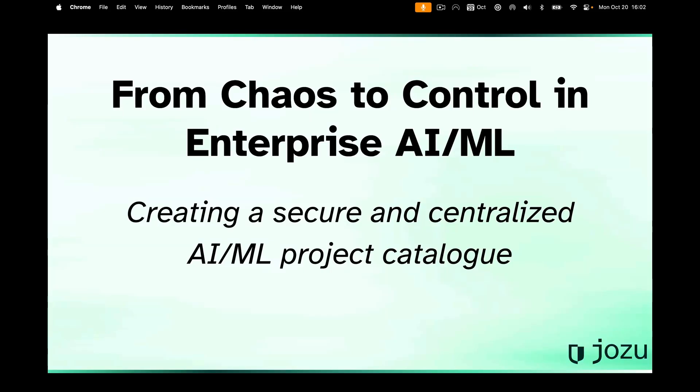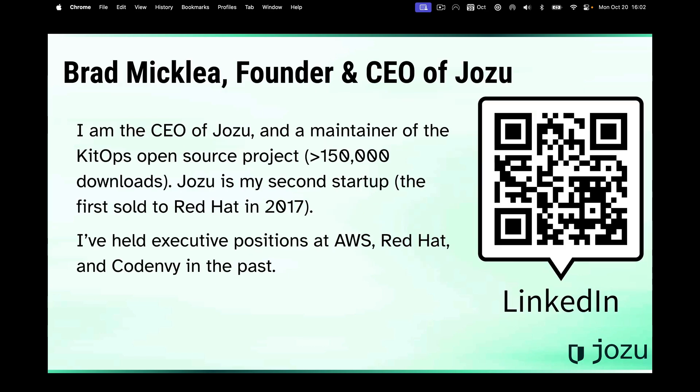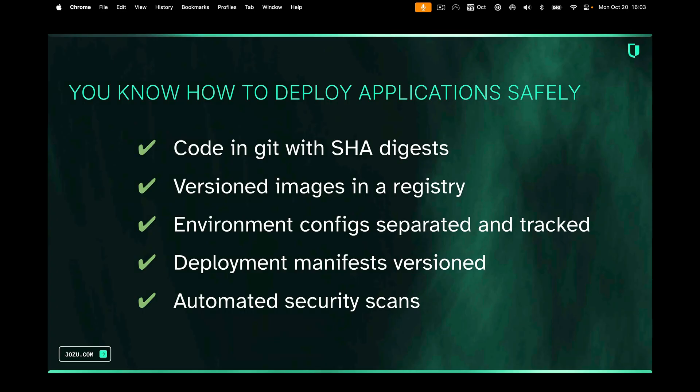Hi, my name is Brad Mickley. Today we're going to talk about how to go from chaos to control in your enterprise AI/ML. I'm the CEO and founder of Jozu and one of the maintainers of the KitOps open-source project, which is one of the CNCF projects. Jozu is actually my second startup. I've held positions at AWS, Red Hat, and CodeEnvy in the past. So let's jump in.